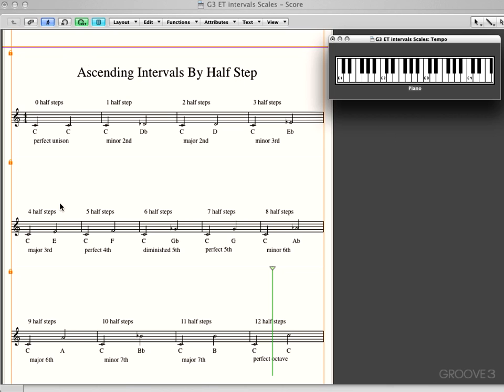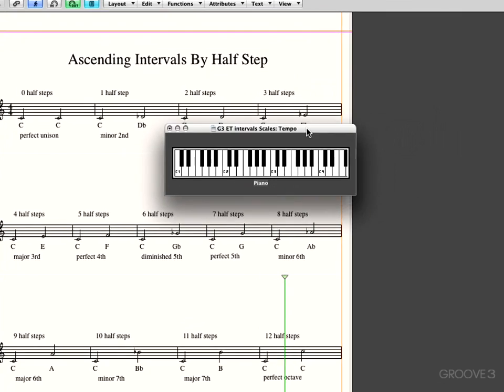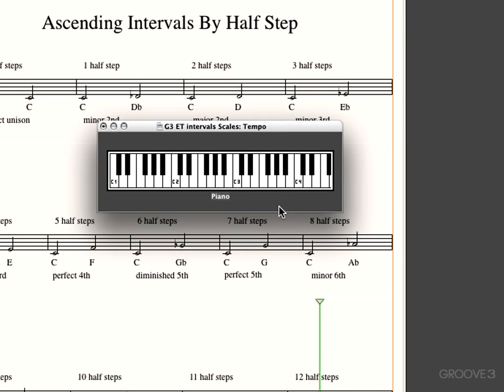I've got a score here, ascending intervals by half steps. I've got a bunch of information here. We've got a little keyboard. Let's bring this to center stage and talk about this for a second. Now the piano is a good example of western intonation, the western major scale and the chromatic scale.